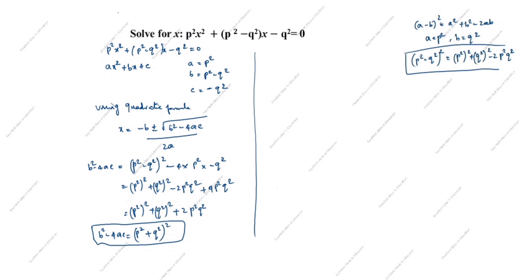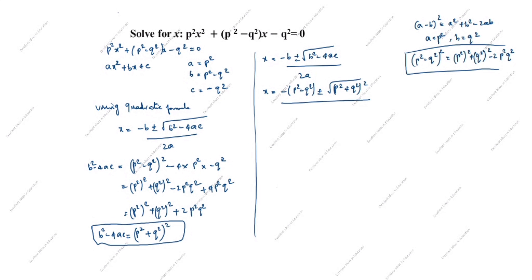Next step. x = [-b ± √(b² - 4ac)] / 2a. Substituting: x = [-(p² - q²) ± √(p² + q²)²] / (2p²). This simplifies to x = [-（p² - q²) ± (p² + q²)] / 2p².